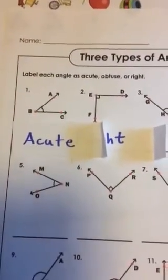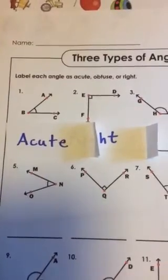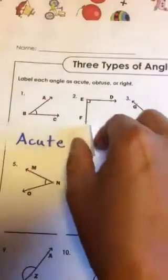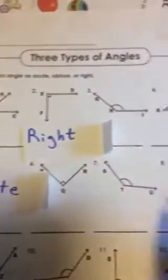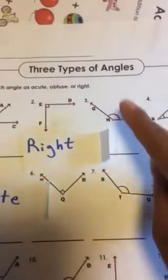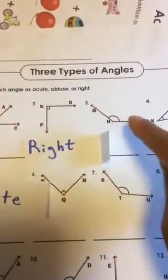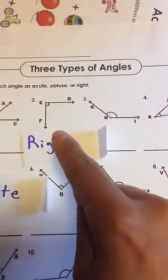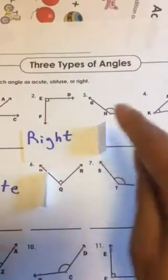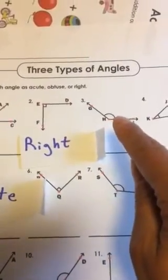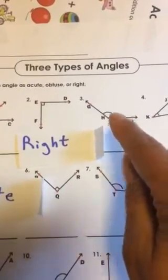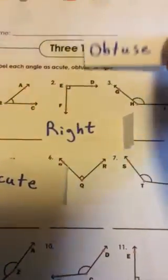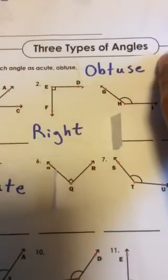Do you remember in class? We remembered that by saying it was a cute little angle. And then we have number three. This one is much bigger than the right angle — in this case the right angle could fit inside. When it's much bigger than the right angle, we call that one obtuse.